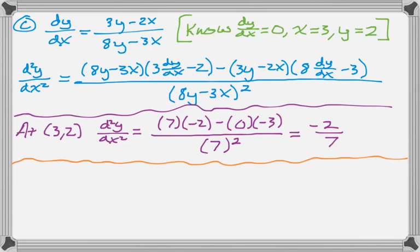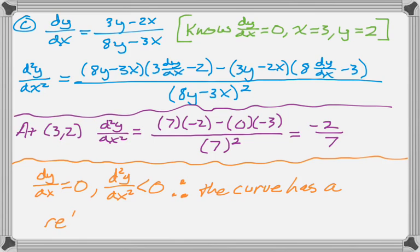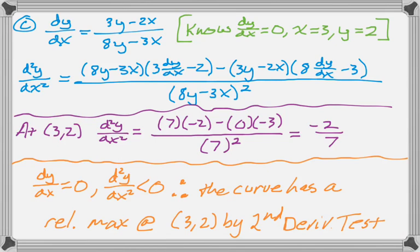So now we just have to write up our conclusion, which is, the first derivative is 0, the second derivative is less than 0, and that means that the curve is going to have a relative or a local maximum. And that's pretty much exactly what the second derivative test will tell you. And so that's what we did. And I hope you found this helpful. Good luck.